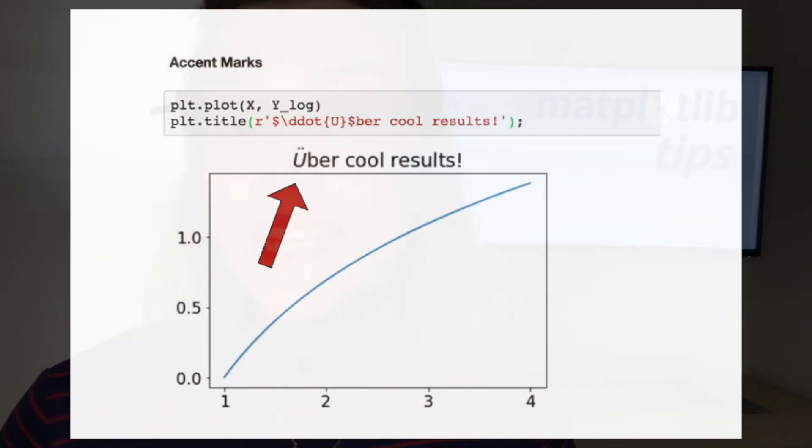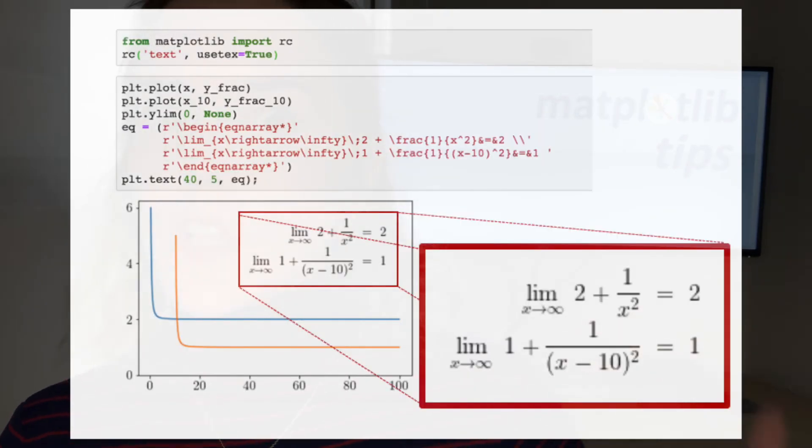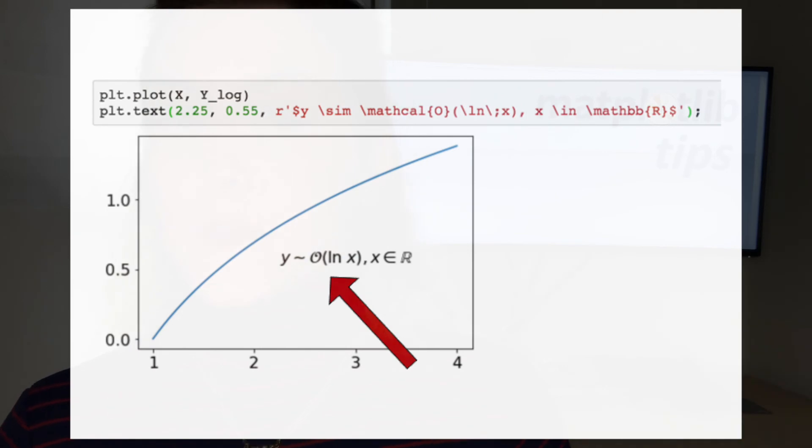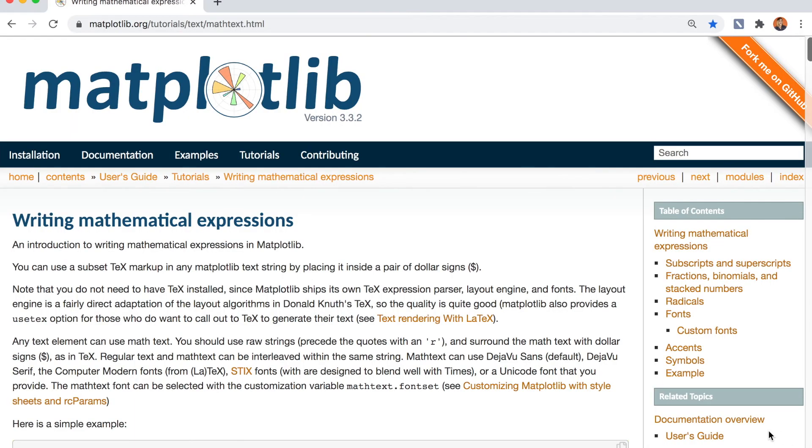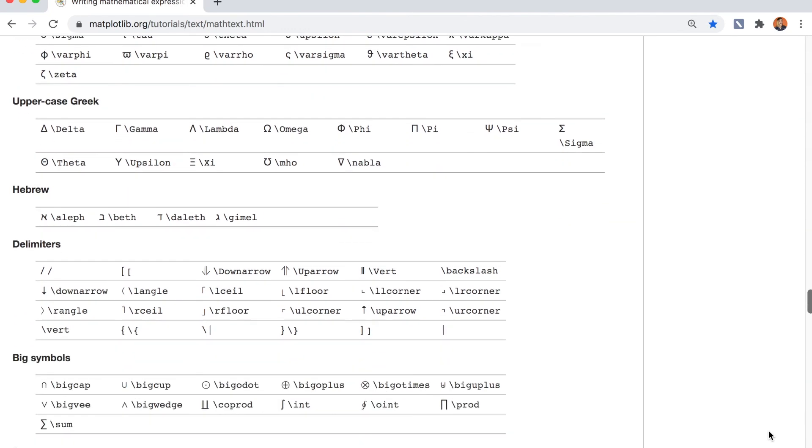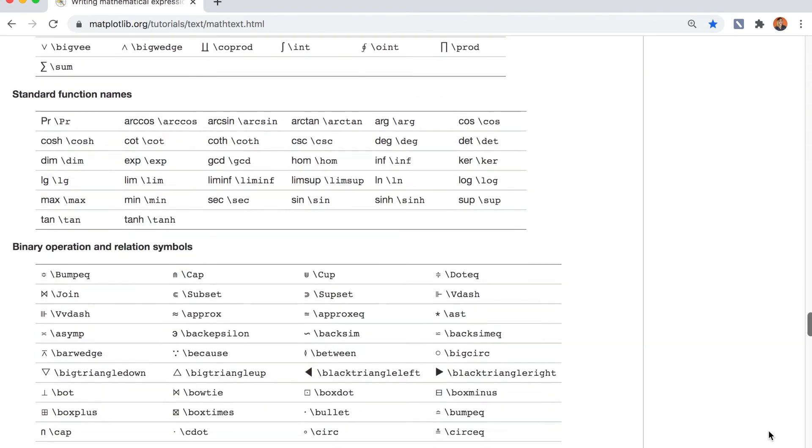For example, you could add accent marks or write out full equation arrays, or potentially switch your font to display something like big O notation. Matplotlib has an excellent resource that displays all the different symbols that you have access to, and I will link that resource in the description below. I'd highly recommend checking that out if there's some specific symbol that you're looking for.